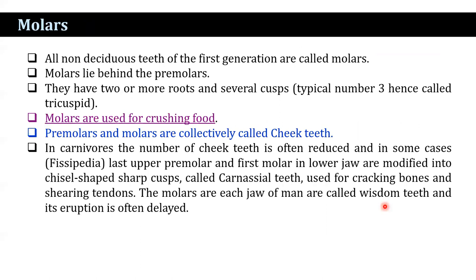Molars lie behind the premolars. They have two or more roots and several cusps; a typical number of three cusps is known as tricuspid. They are used for crushing food. Premolars and molars are collectively called cheek teeth. In carnivores, the number of cheek teeth is often reduced, and in some cases the last upper premolar and first lower molar are modified to form chisel-shaped sharp cusps, known as carnassial teeth, which are used for cracking bones and severing tendons.